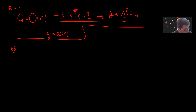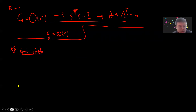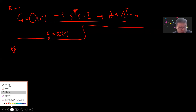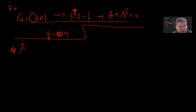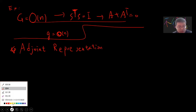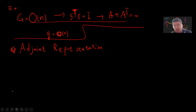Now let me introduce a very important representation called the adjoint representation. This is considered the most important representation in Lie algebra. The question is: how do you construct the simplest representation from the definition of the algebra itself?